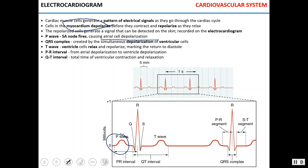During the QRS complex, ventricles depolarize and contract, and atria start to repolarize and relax. During the T-wave, ventricles repolarize and relax. The P-R interval shows the time between atrial depolarization and depolarization of the ventricles. The Q-T interval shows the time it takes for the ventricles to go from the start of contraction to complete relaxation.